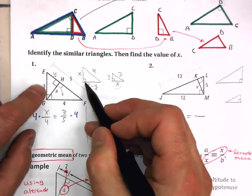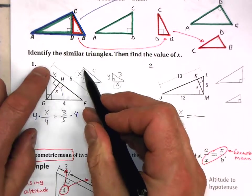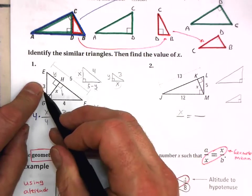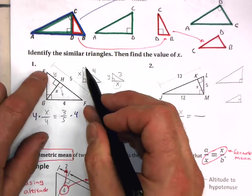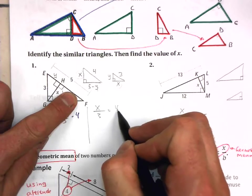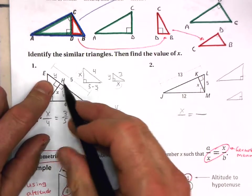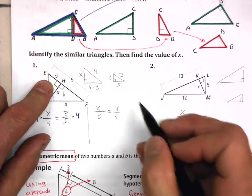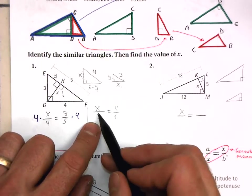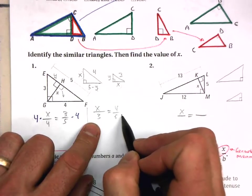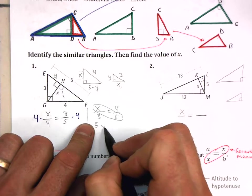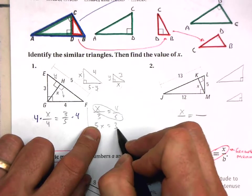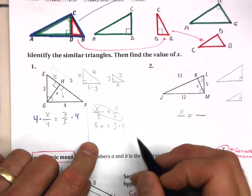There's another solution here. What I could do is say X over 3. These two sides correspond to each other, and then these two sides correspond to each other. X over 3. So I'm doing right over left equals right, which is 4, over left, which is 5. So I could use that proportion.